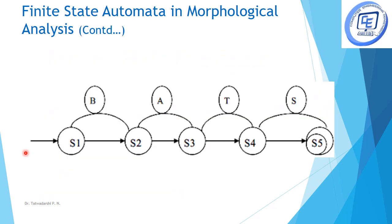For example, take the word 'batch'. In tokenization using finite automata, starting from the start state, we encounter the characters B, A, T, C, H one by one. If the finite automata stops at this point in the final state, it accepts the string 'batch'. This is how tokenization in morphological analysis is done using finite state automata.